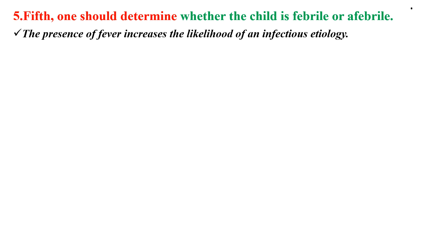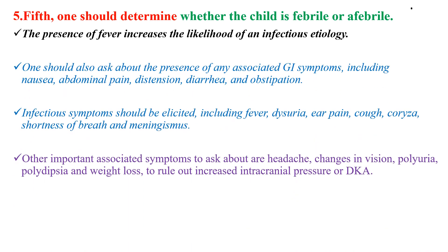Fifth, one should determine whether the child is febrile or afebrile. The presence of fever with vomiting increases the likelihood of an infectious etiology. One should also ask about associated GI symptoms such as nausea, abdominal pain, distension, diarrhea, and obstipation. Infectious symptoms should be elicited including fever, dysuria, ear pain, cough, coryza, shortness of breath, and signs of meningitis. Other important associated symptoms include headache, change in vision, polyuria, polydipsia, and weight loss, to rule out increased intracranial pressure or DKA.